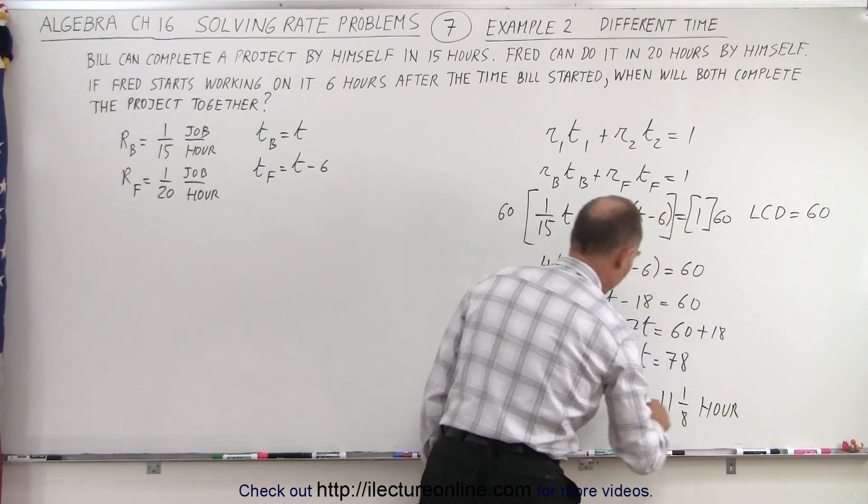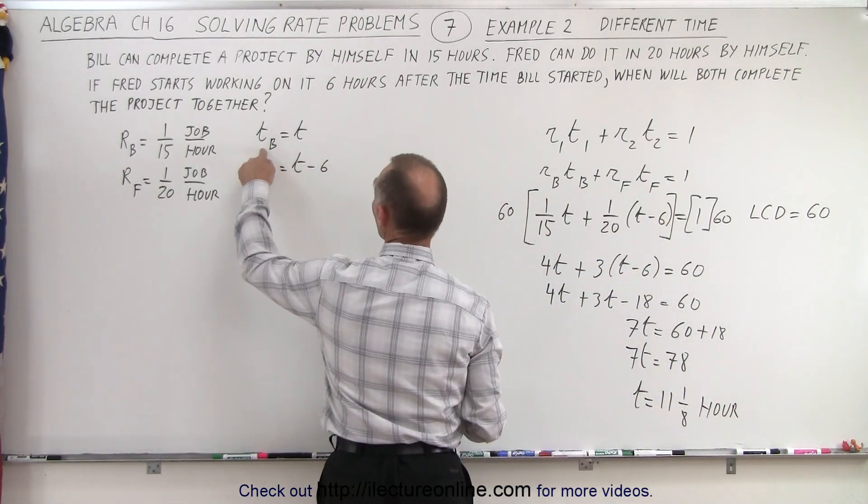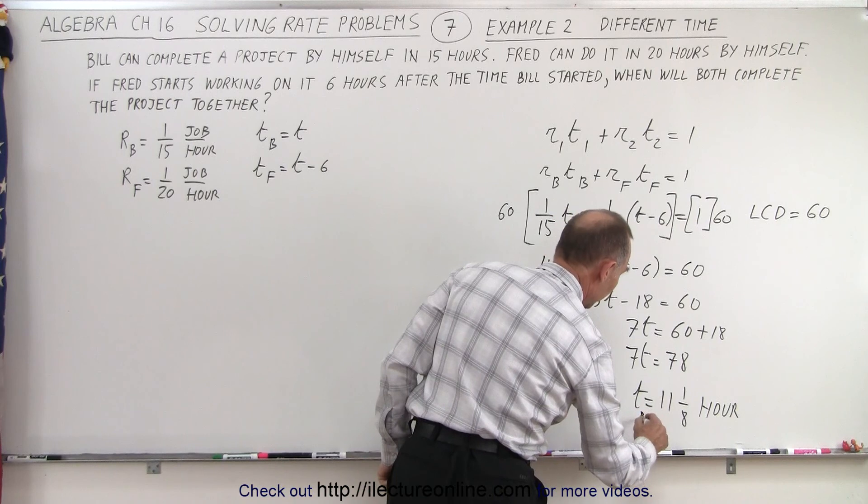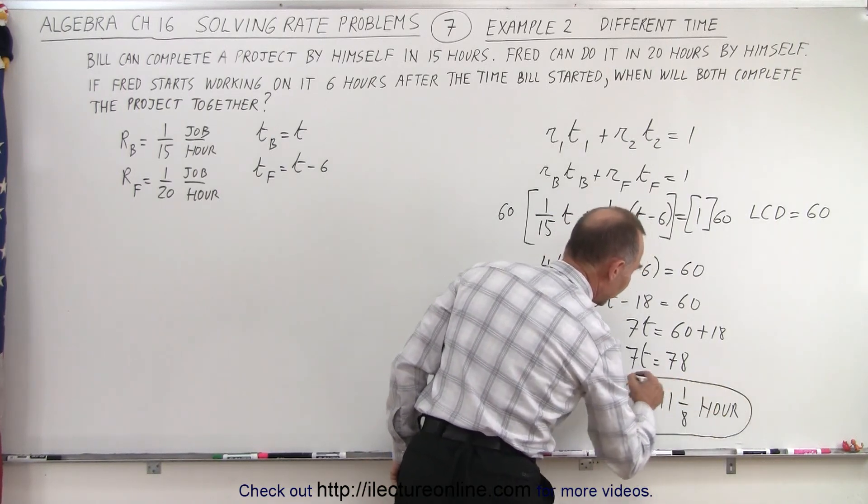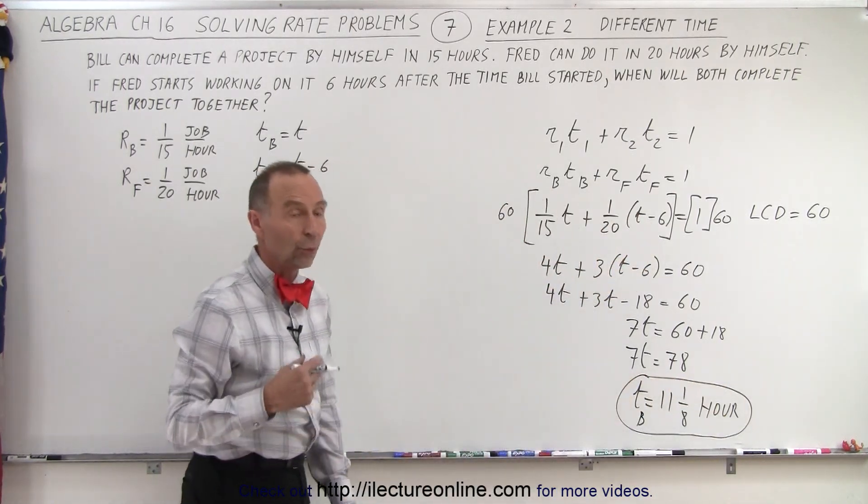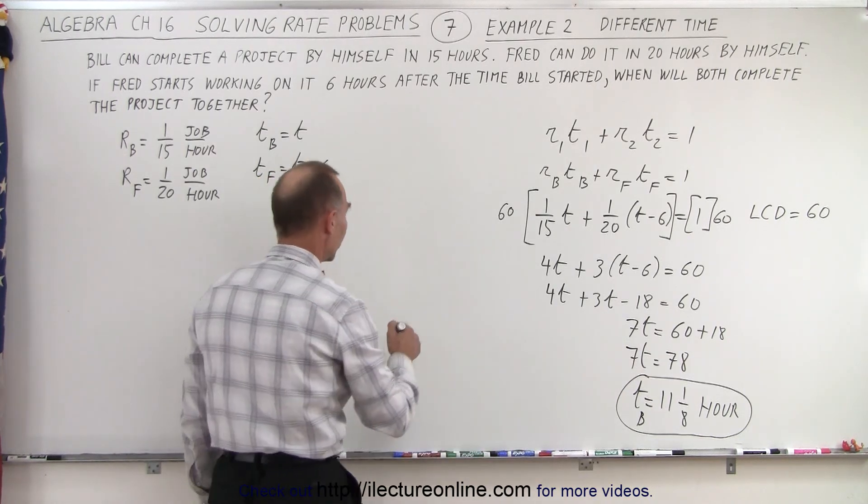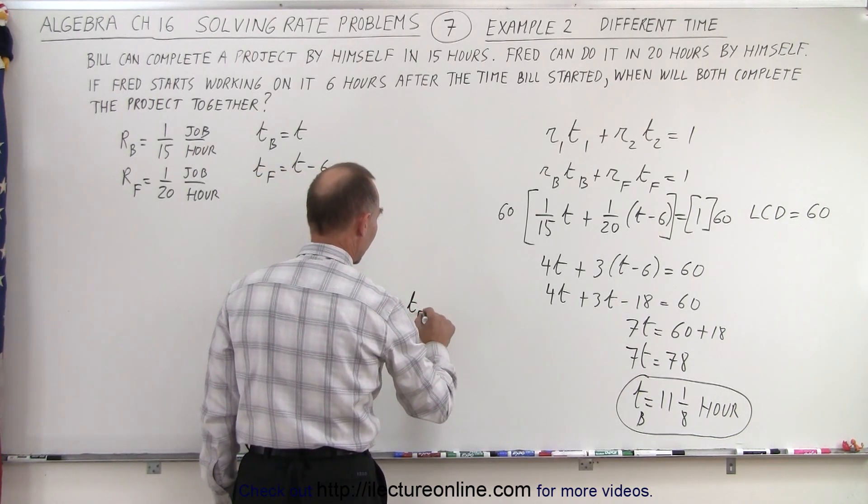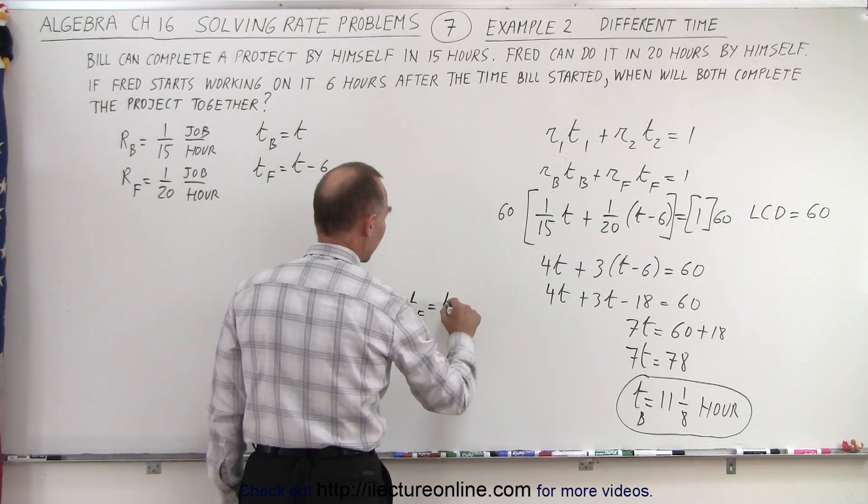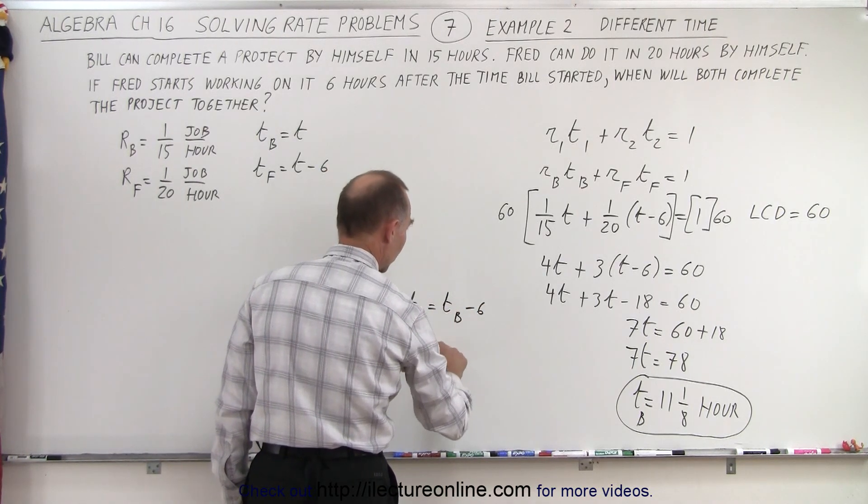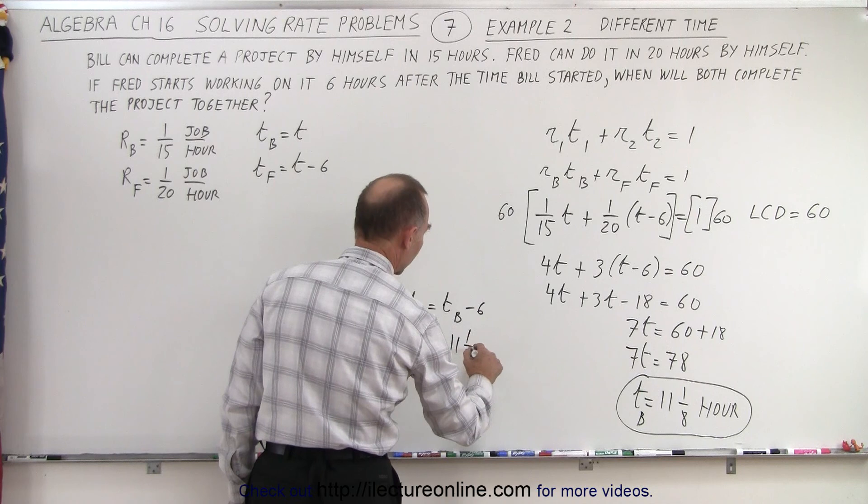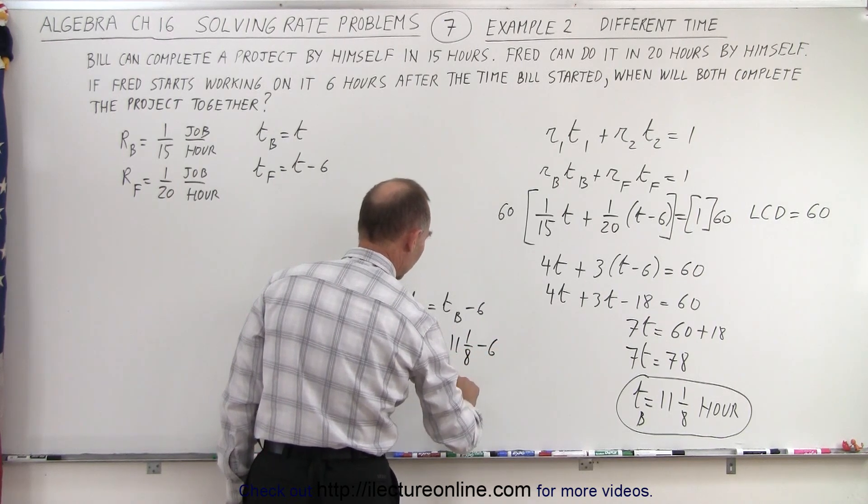And of course since t is equal to the time of Bill, that would be Bill's time. Bill will spend 11 and 1/8 hours to work on the project when Fred joins 6 hours after he starts. Therefore the time for Fred which is equal to the time of Bill minus 6, which is 11 and 1/8 hour minus 6 hours, which is 5.